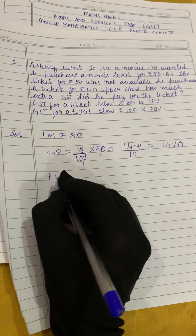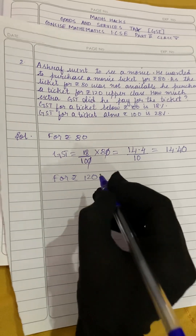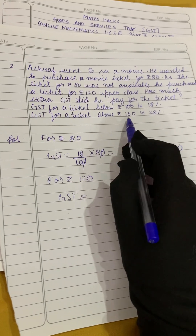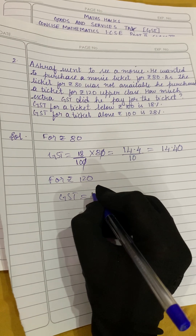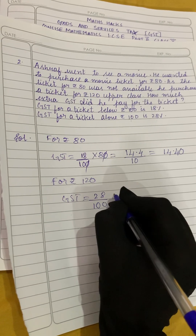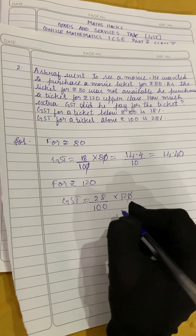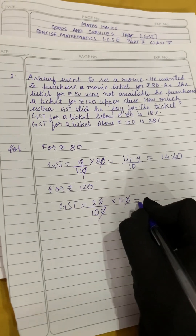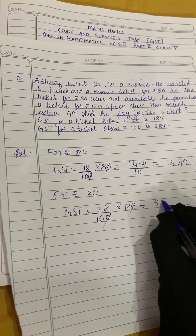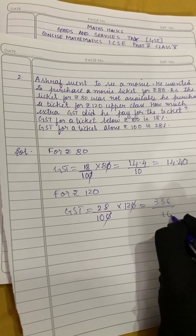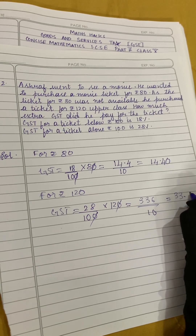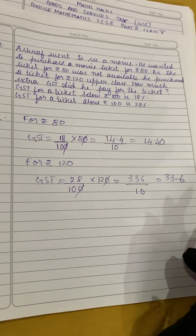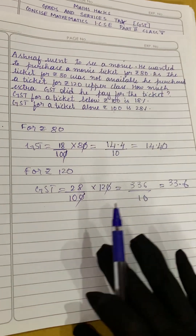Now let us find the GST for rupees 120, which he actually had to pay. Since 120 is above 100, the GST is 28 percent. So 28 by 100 into 120 — cancel one zero from each — 28 into 12 divided by 10 gives 336 divided by 10, which equals 33.60. Now we have the GST for both rupees 80 and rupees 120.